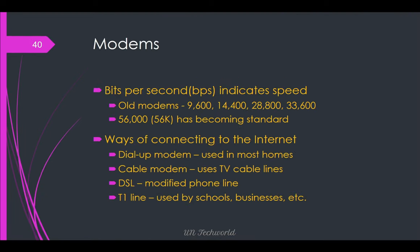Bits per second indicates the modem speed. Old modems were 9600, 14400, 28800, and 33600 bits per second. 56K has become the standard. Ways of connecting to the internet include dial-up modem, cable modem, DSL, ADSL, T1 line, and nowadays fiber. These can be used for school, business, home, etc.